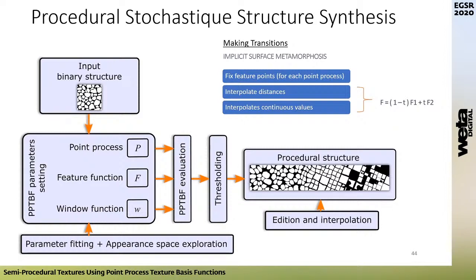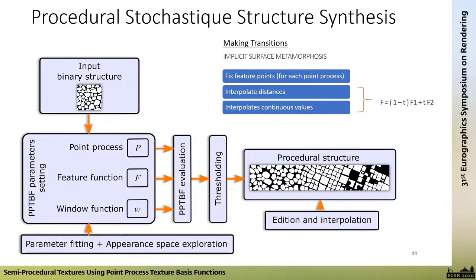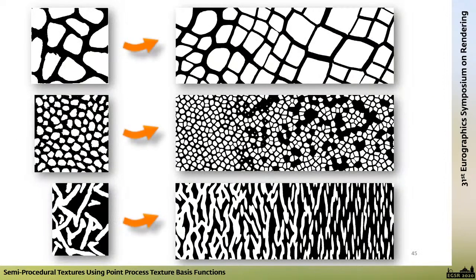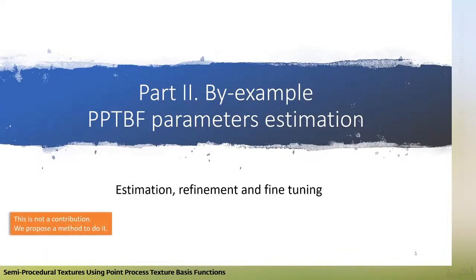One nice property of the PPTBF model is that we can make transitions between visual patterns — it is just metamorphosis of distance functions — so you can create nice patterns. Here is the second part of the talk, which deals with by-example parameter estimation of our procedural structures.